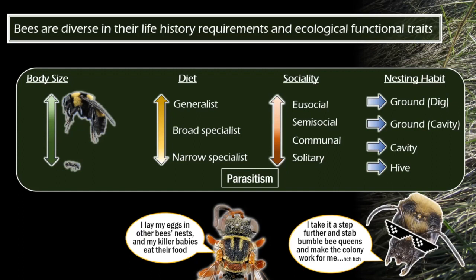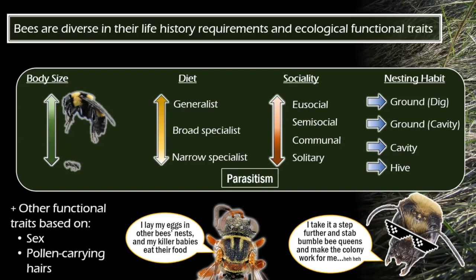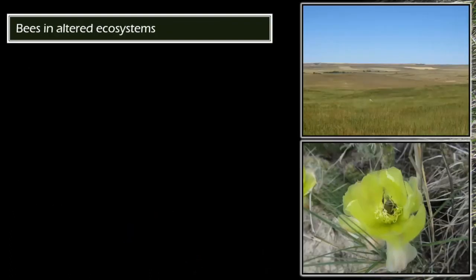For nesting habit, bees nest in very many different ways. Most bees nest in the ground — some dig their own holes, while others must use existing cavities they can't dig themselves. There are also cavity-nesting bees that nest in pithy stems and other existing cavities. I also have a hive category because North Dakota is the biggest honeybee producer in the US, so we have lots of honeybees here, but they don't live like native bee species, so they're in their own category.